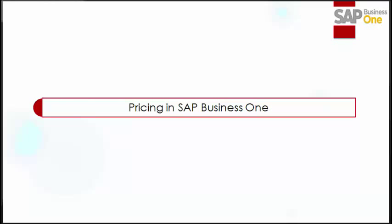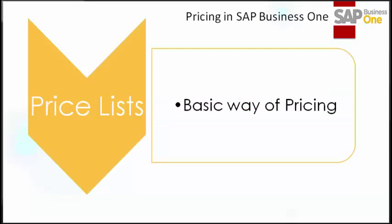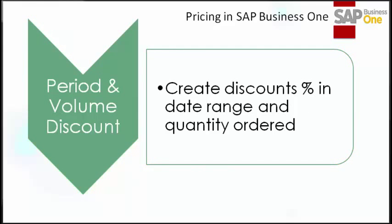That is why SAP Business One has several ways to handle pricing. The first type of pricing is rather simple — a basic way of pricing. You can set up prices for different goods or customers. On each price list you can enter a price for each item and unit of measure. Then when a business partner who belongs to that price list buys an item, they get the right price for their goods.